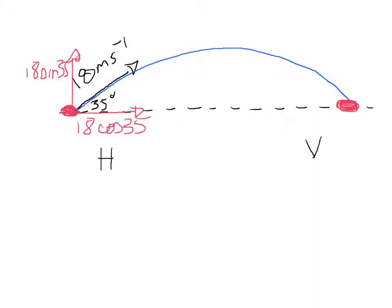So when we split the initial velocity up into its horizontal component and vertical component, we get 18 cos 35 for the horizontal and 18 sin 35 for the vertical.